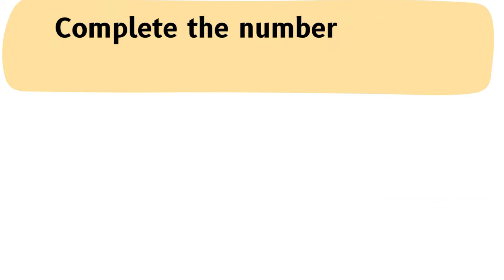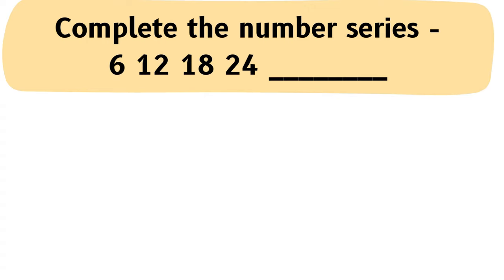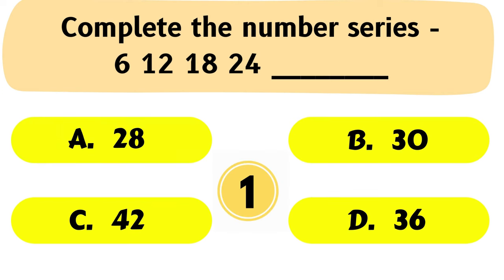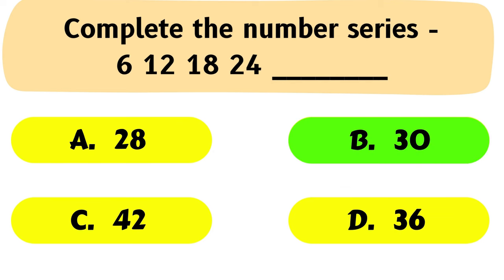Question No. 5: Complete the number series 6, 12, 18, 24, ___. A. 28, B. 30, C. 42, D. 36. The correct answer is Option B: 30.